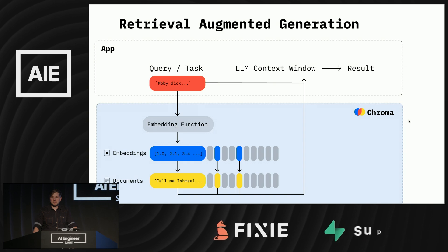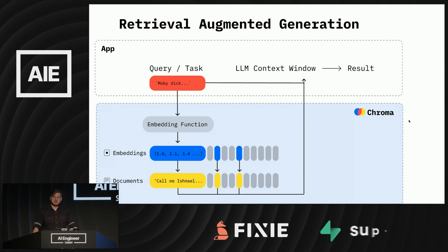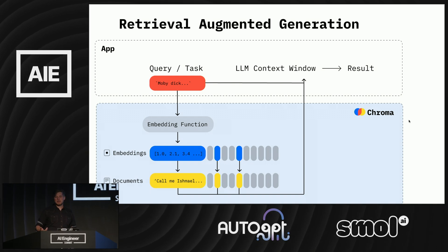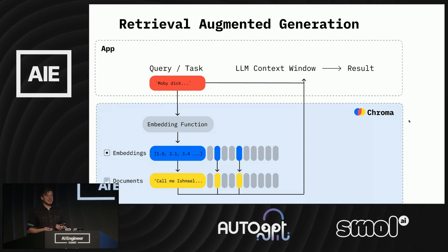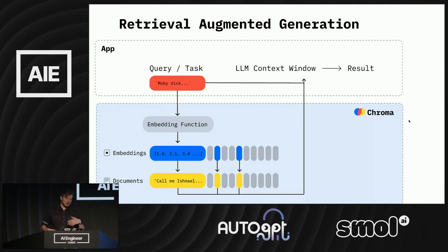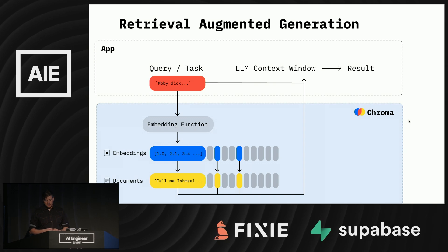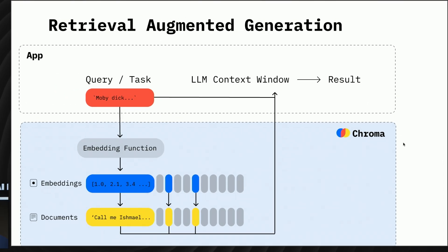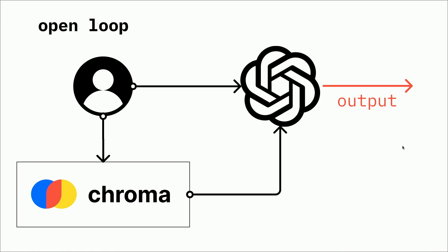By now you've all seen versions of this probably a half dozen times throughout this conference. This is the basic retrieval loop that one would use in a RAG application. You have some corpus of documents. You embed them in your favorite vector store, which is Chroma. You embed your corpus of documents, you have an embedding model for your queries, you find the nearest neighbor vectors for those embeddings and you return the associated documents, which along with the query you then put into the LLM's context window and return some result. This is the basic RAG loop, but I think of this as more like the open loop retrieval augmented generation application.